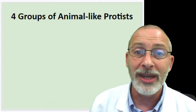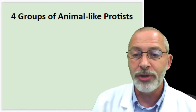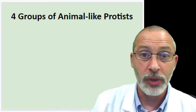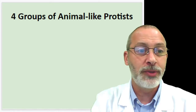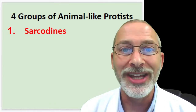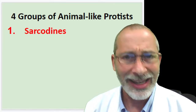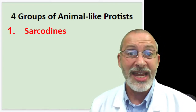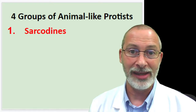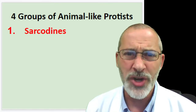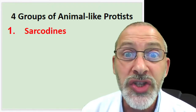In this big category of animal-like protists, there's a lot of variety. Scientists have come up with four different groups of animal-like protists. Let's start talking about those four main groups, beginning with the first one: the sarcodines. Notice the spelling as you're writing it down, and say it out loud.